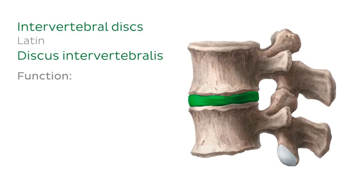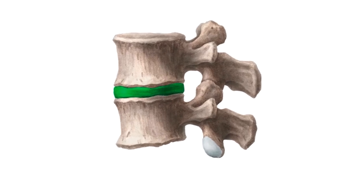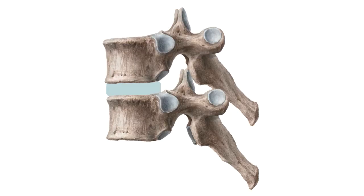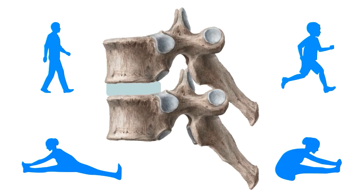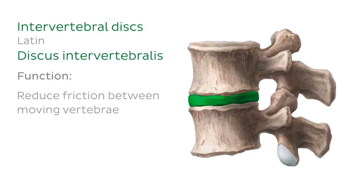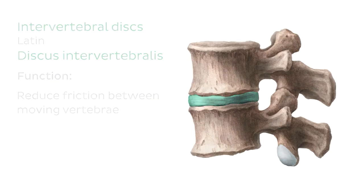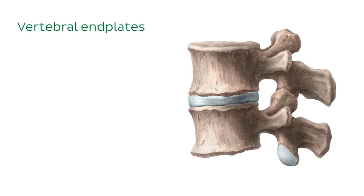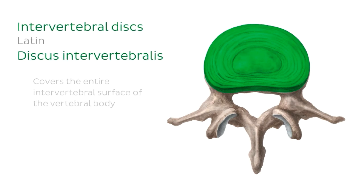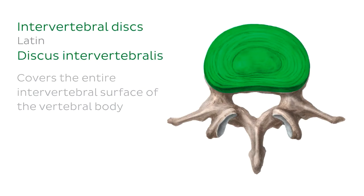The intervertebral discs contribute to fibrocartilaginous joints, which allow slight movement of the vertebral column and act as ligaments that hold the vertebrae together. The discs also act as fibrocartilaginous cushions, serving as the spine's shock-absorbing system, cushioning the effect of shock and stress produced when an individual walks, runs, bends, or twists. They also reduce friction between moving vertebrae by preventing vertebral bodies from grinding against one another. Vertebral end plates are thin cartilaginous interfaces found between the intervertebral discs and the vertebrae above and below. Each disc covers the entire intervertebral surface of the vertebral body and is made up of two parts: the annulus fibrosus and the nucleus pulposus.